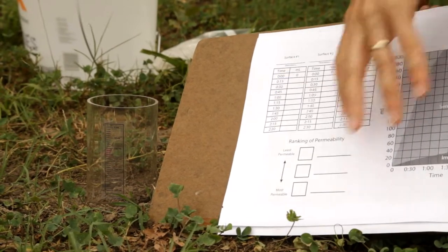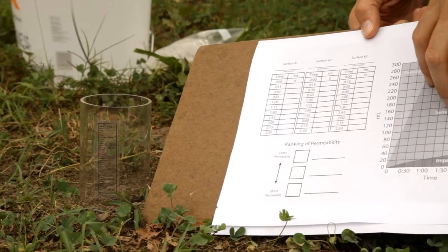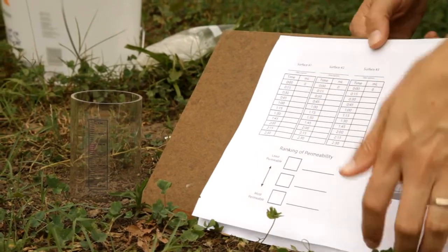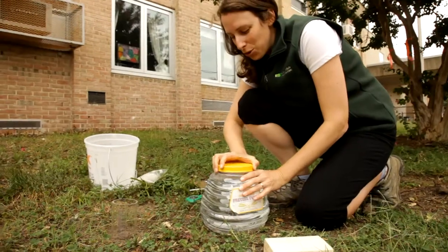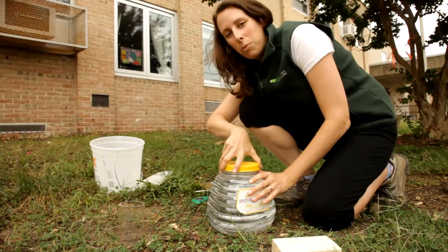We'll do this for several different surface types in the schoolyard and then graph our results. What we'll get are the rates of infiltration for the different surface types. Usually you would have three or four students to a group to help with the different jobs.